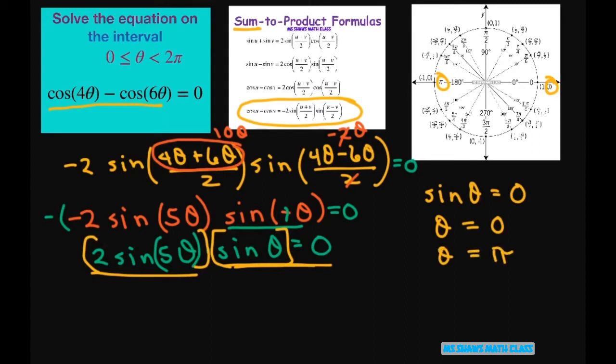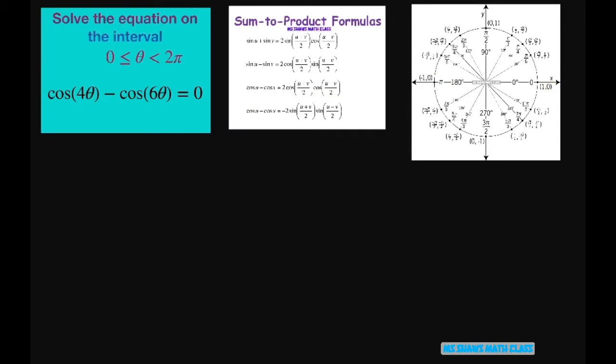We can't use 2π. So we already have two solutions. Now for this one we're going to have to set it up as such. We have 2 sine of 5θ equals 0. If you divide both sides by 2, this gives you sine of 5θ equals 0.